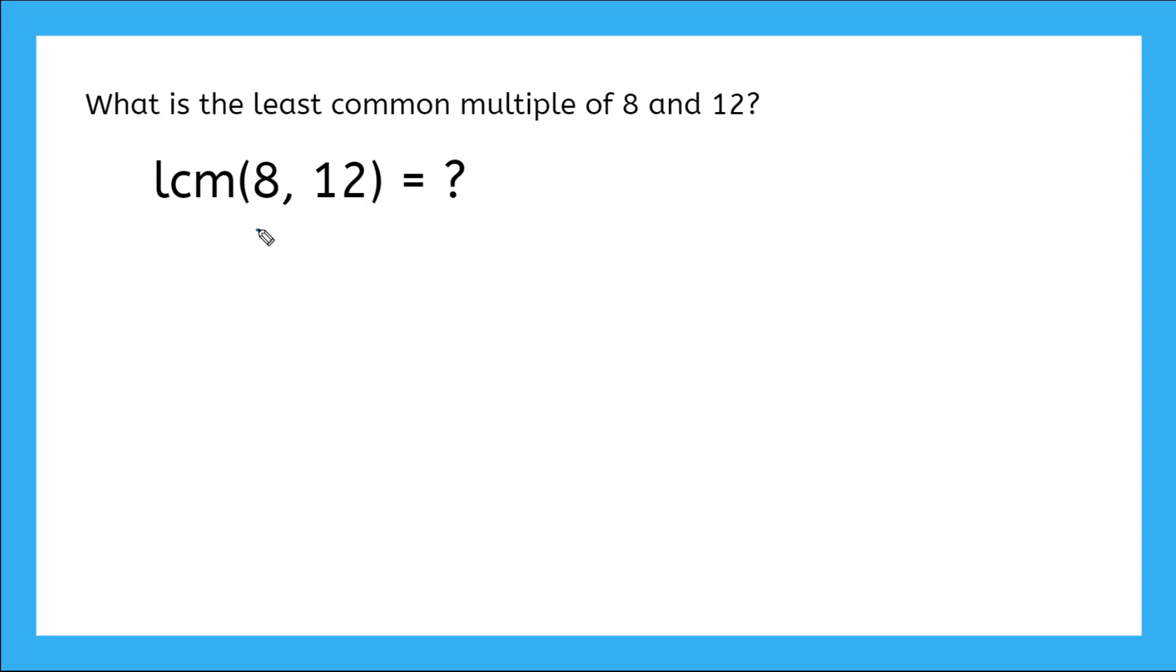So I'll start with my factor tree for 8. I know that 8 breaks into 2 branches: 2 and 4, and 4 also breaks into 2 branches: 2 and 2. So I know that 8 is equal to its prime factorization 2 times 2 times 2, and I can do the same thing for 12.